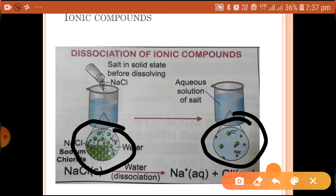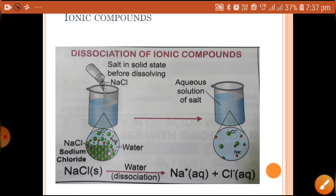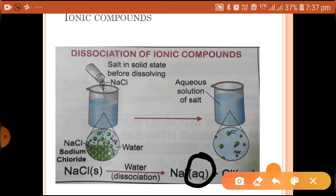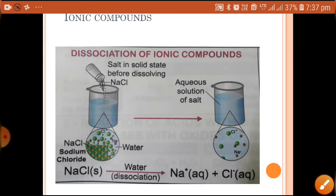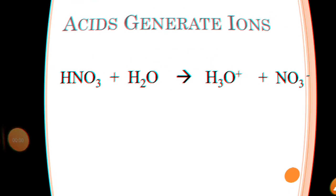Each dissociated ion in aqueous solution is surrounded by water molecules. This state is indicated by writing 'aq' (aqueous). You can see 'aq' written next to Na⁺, meaning Na⁺ is surrounded by water molecules. 'S' stands for solid — NaCl in solid form has no surrounding water. Similarly, Cl⁻ is also aqueous. This is dissociation of ionic compounds — in the same way, every ionic compound dissociates when dissolved in water.